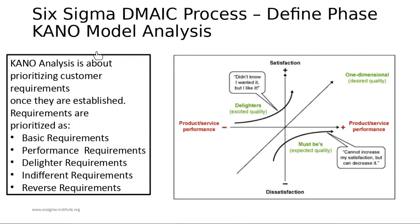The Kano model is about exceeding customer expectations to meet their satisfaction. For example, when purchasing a car today, it is a must to have at least an AC. This 'must-be' quality is not about satisfaction — it's a baseline requirement. It will not improve satisfaction, but if you don't provide it, customers will not be satisfied.